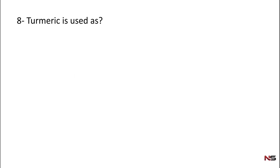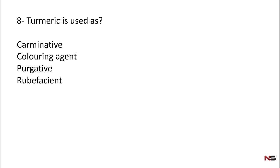If anyone has doubts regarding these questions, please write them in the comment section. If anyone needs a class on a special subject or topic, you can mention the topic name and I will try to provide the classes. Question 8: Turmeric is used as? Options: Carminative, Coloring Agent, Purgative, Rubefacient. The correct answer is Coloring Agent — turmeric is used as a coloring agent.